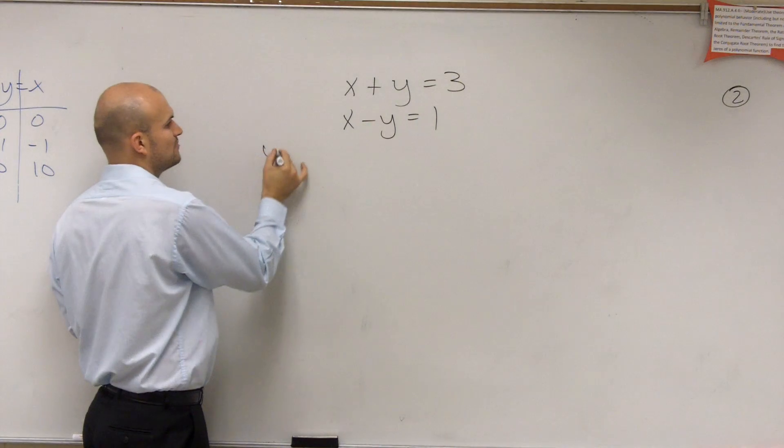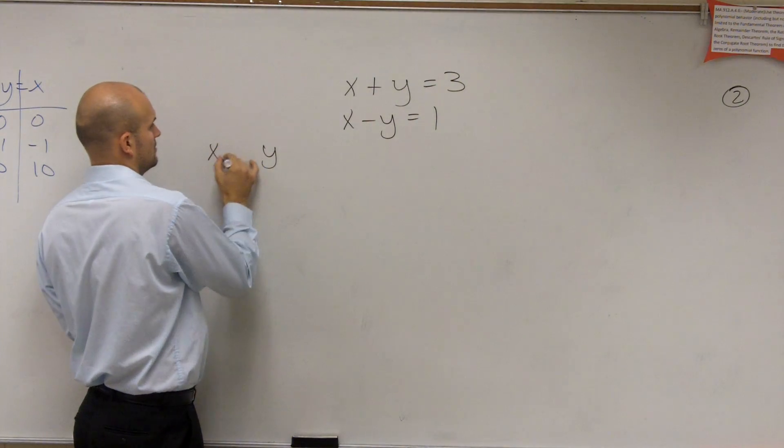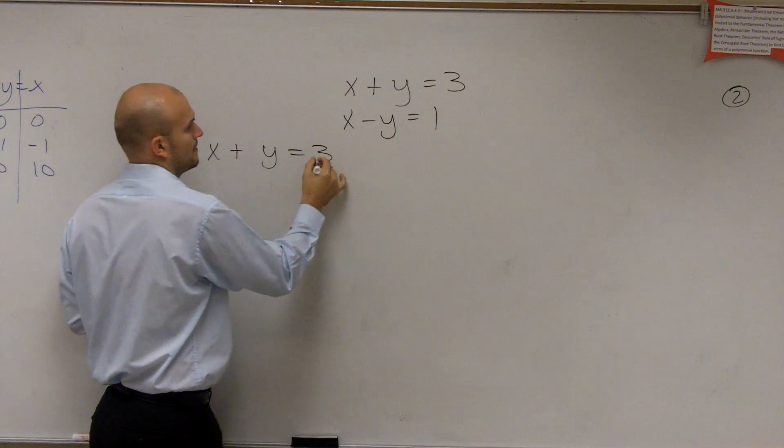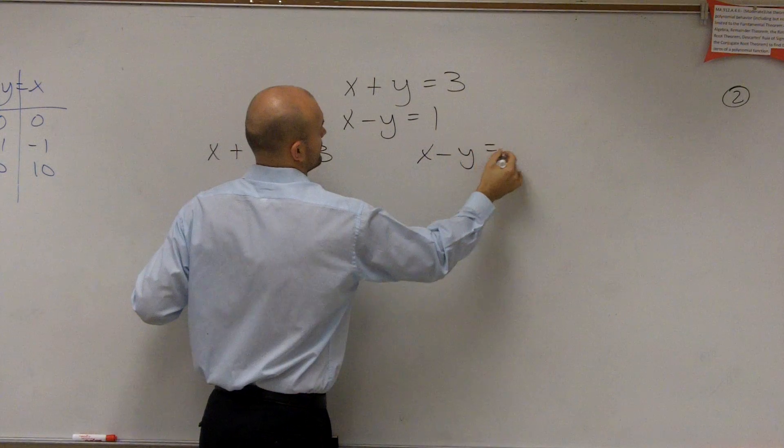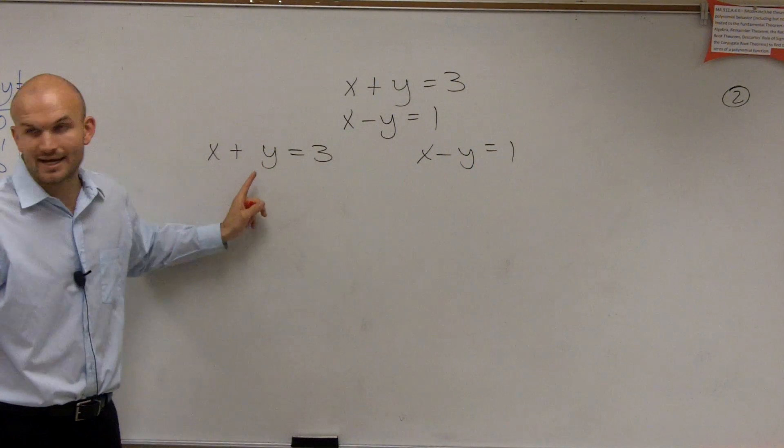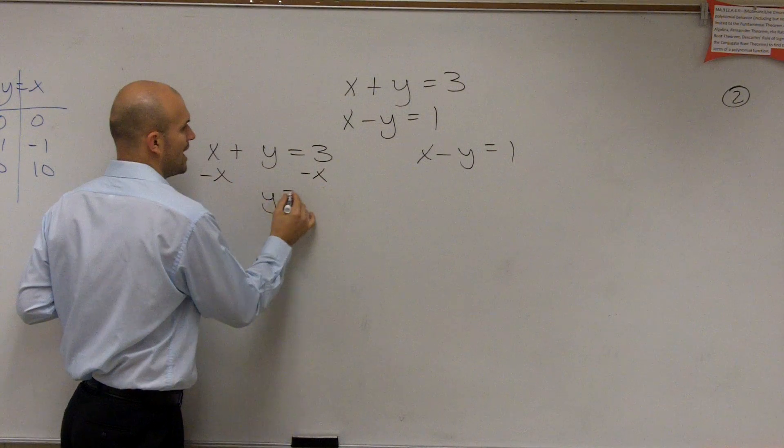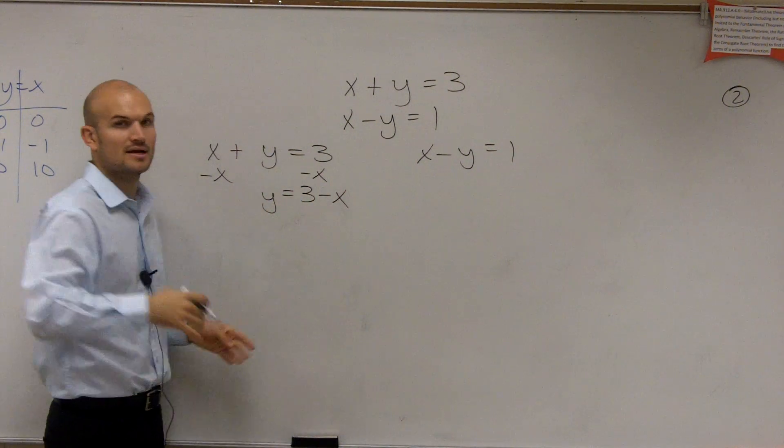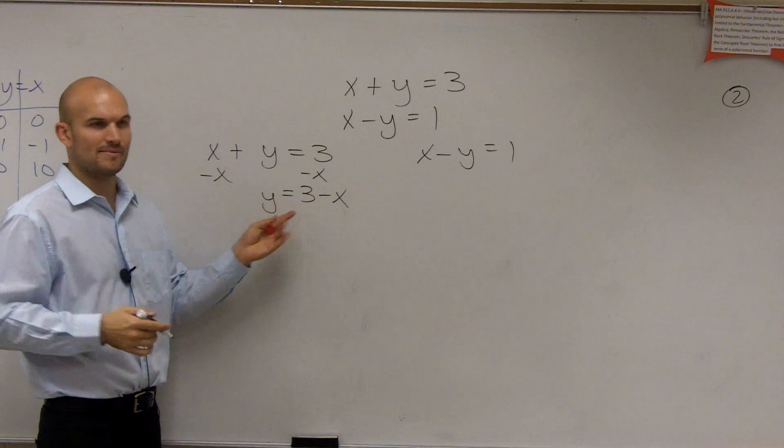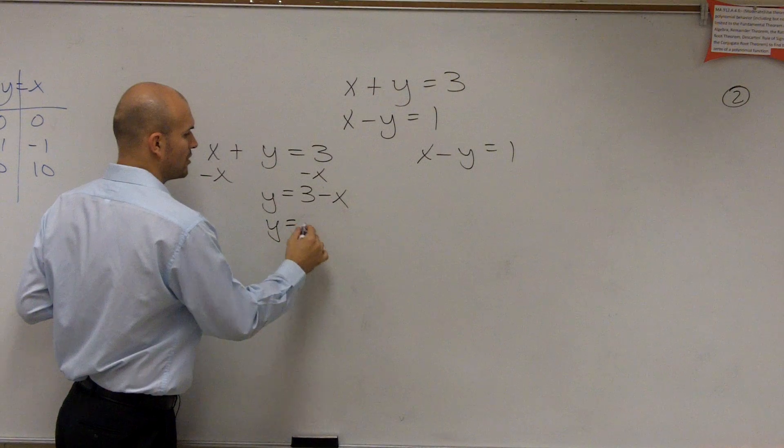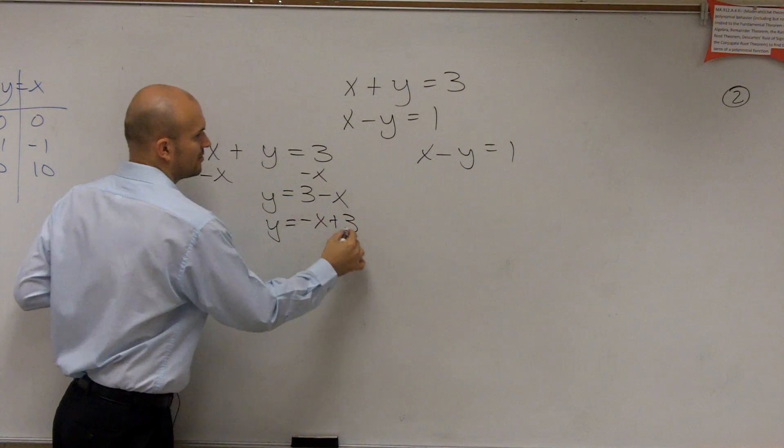So what I'm going to do is I'm going to put these both into slope intercept form. So to do that, I've got to isolate the y, so I'm going to subtract the x. So I write y equals 3 minus x, but I don't want to write y equals 3 minus x. I want it in slope intercept form, which is negative x plus 3.